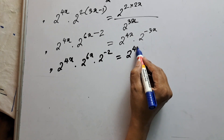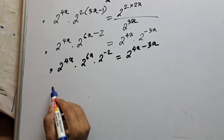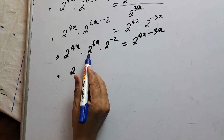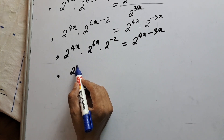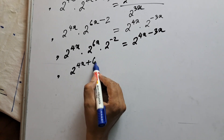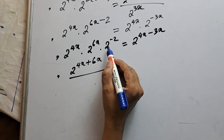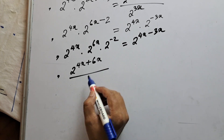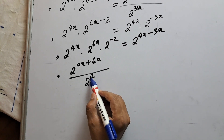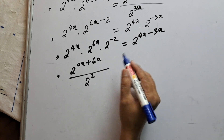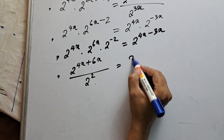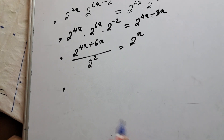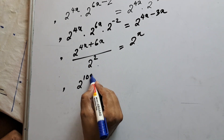So 2 to the power 3x in the denominator becomes 2 to the power minus 3x when moved to the numerator. Now on the left side: 2 to the power 4x times 2 to the power 6x minus 2 — same base, powers add up — gives 2 to the power 6x minus 2. On the right side: 2 to the power 4x times 2 to the power minus 3x, powers add up: 4x minus 3x equals x.